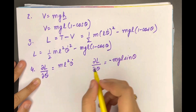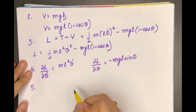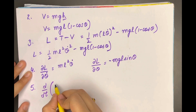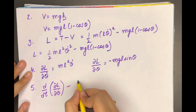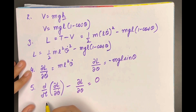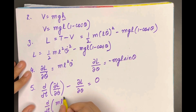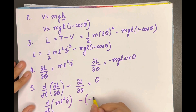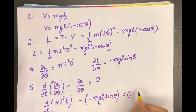The fifth step is to substitute these back into the Lagrange equation of motion: d/dt(∂L/∂θ̇) minus ∂L/∂θ equals zero. Substituting, we get d/dt(ml²θ̇) minus (−mgl·sinθ) equals zero.